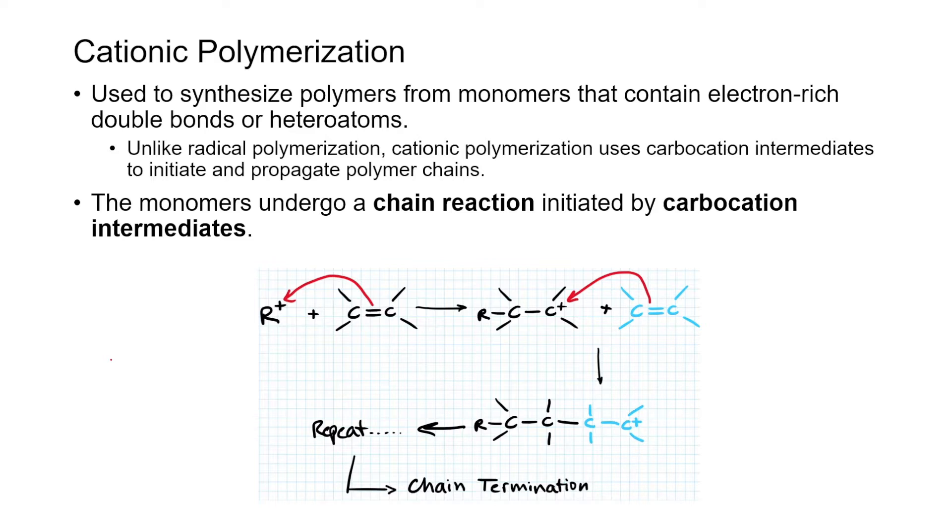So in cationic polymerization, we essentially synthesize polymers from monomers that contain electron-rich double bonds or heteroatoms. Now, whoa, that was loud. Sorry, there's a thunderstorm going on outside.